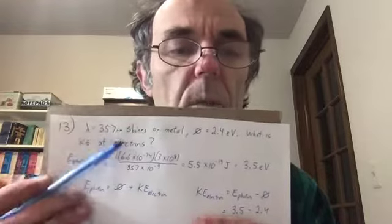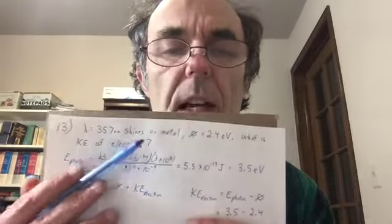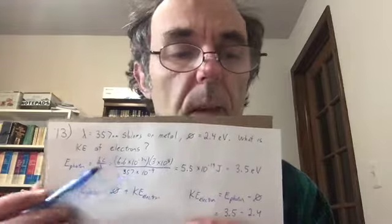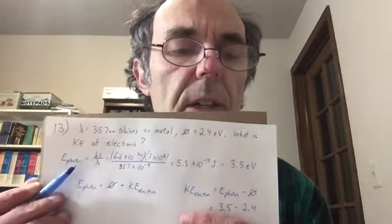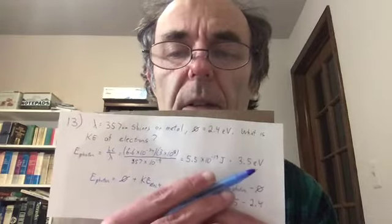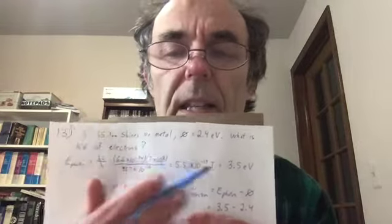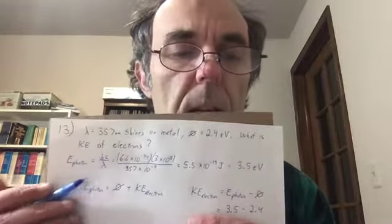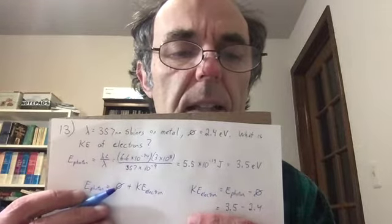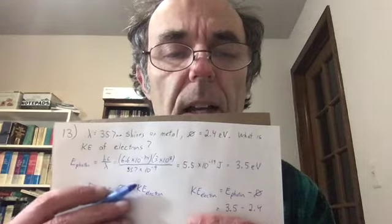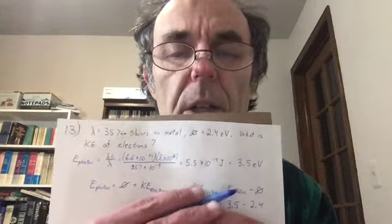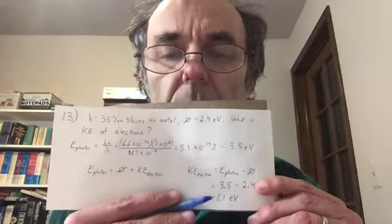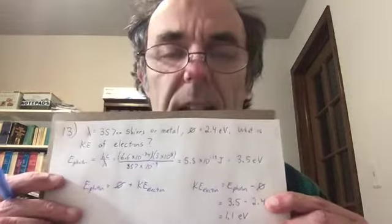Problem thirteen: The photoelectric effect — wavelength 357 nm, work function 2.4 eV. Find kinetic energy of emitted electrons. Photon energy E = hc/λ = 3.5 eV. Energy conservation: E_photon = work function + KE. Solving: KE = 3.5 − 2.4 = 1.1 electron volts.